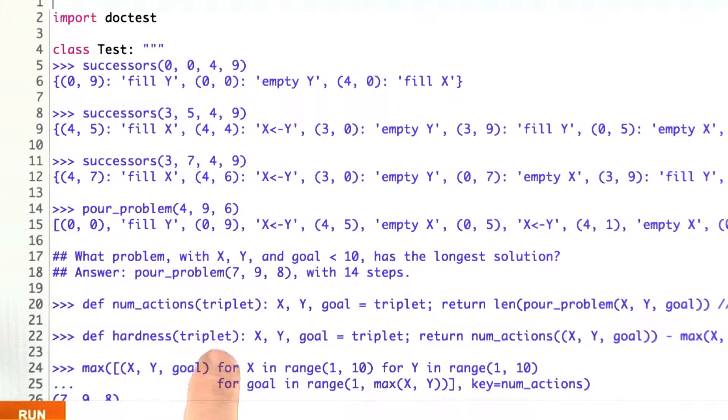Here I've typed in what I've done at an interactive session, what the results should be, and then when I make a change to my program, I can run it again and make sure I haven't messed anything up. For example, at the start here, I just want to test out what are the successors of the start state when both glasses are empty, and when one glass has capacity 4 and the other has capacity 9.